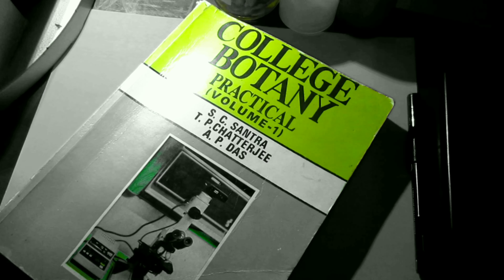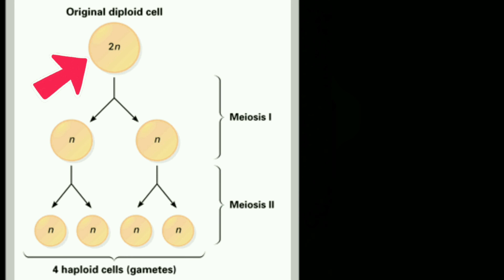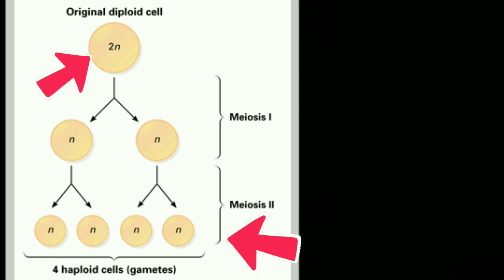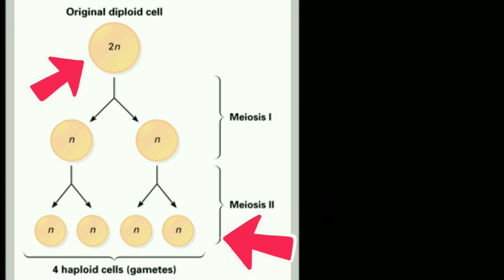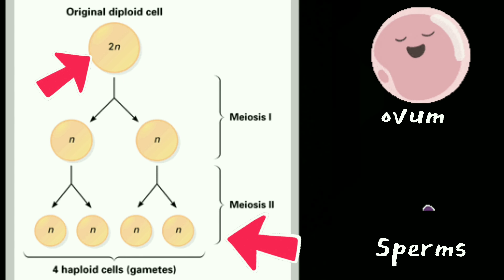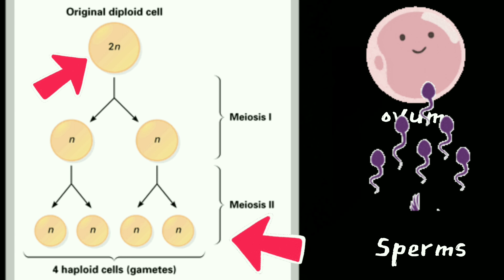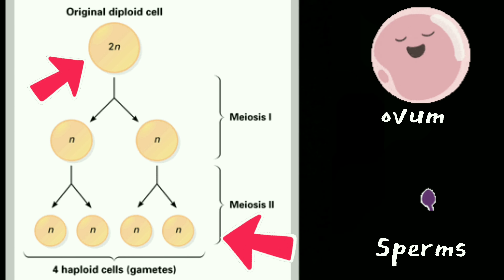First we need to get a quick review on meiosis. Meiosis is a process where a single cell divides twice to produce four cells containing half the original amount of genetic information. It produces our sex cells or gametes — eggs in females and sperm in males.